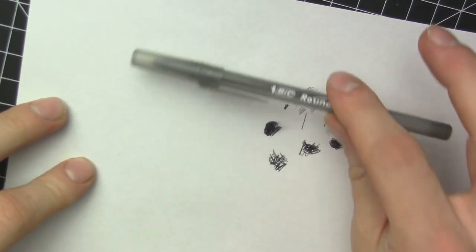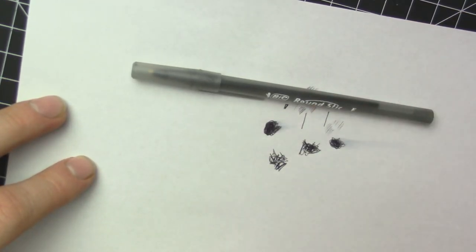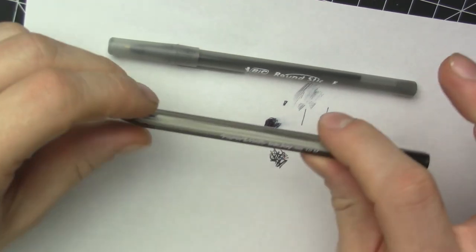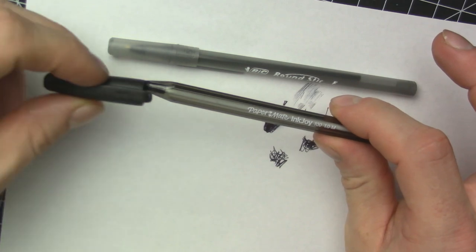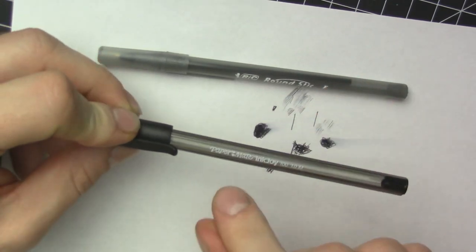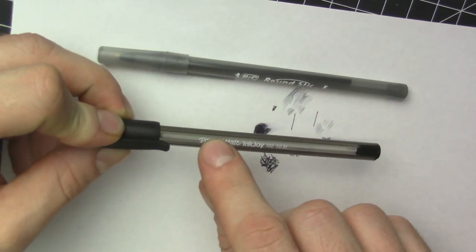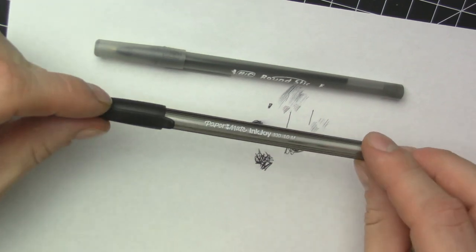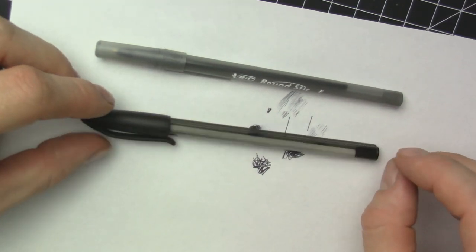So the BIC ballpoint benefits would be that it's better for shading, but it does smudge a little bit more. The Papermate InkJoy does not smudge as much, has a tripod grip, but the problem is that you can't do as much shading with this pen as you can do with the BIC Round Stick.